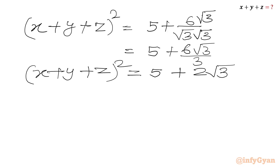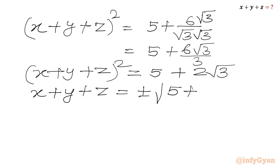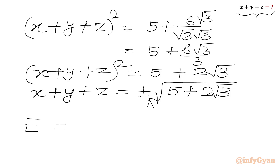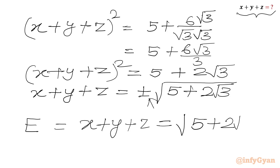Taking the square root of both sides: x + y + z = ±√(5 + 2√3). Since x, y, z are positive reals, the minus sign is rejected. So our final answer is e = x + y + z = √(5 + 2√3).